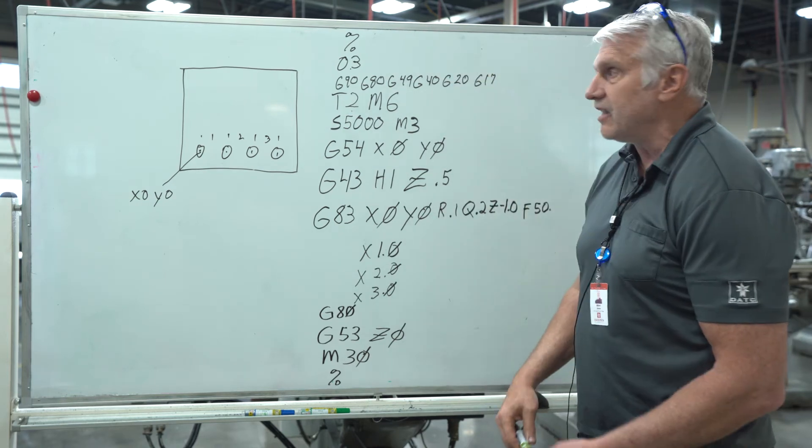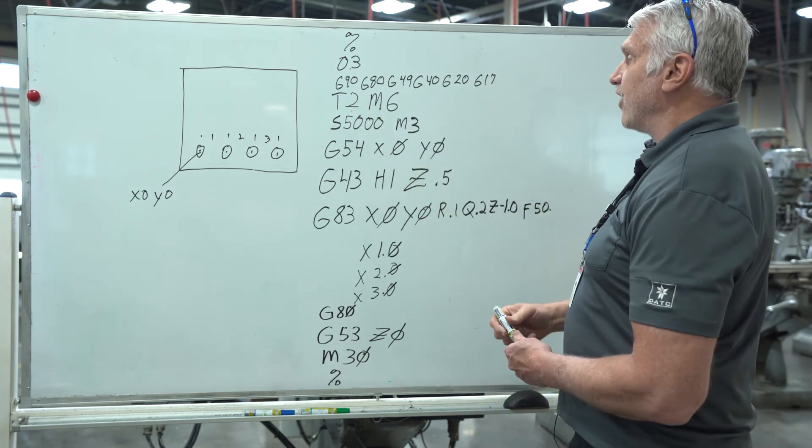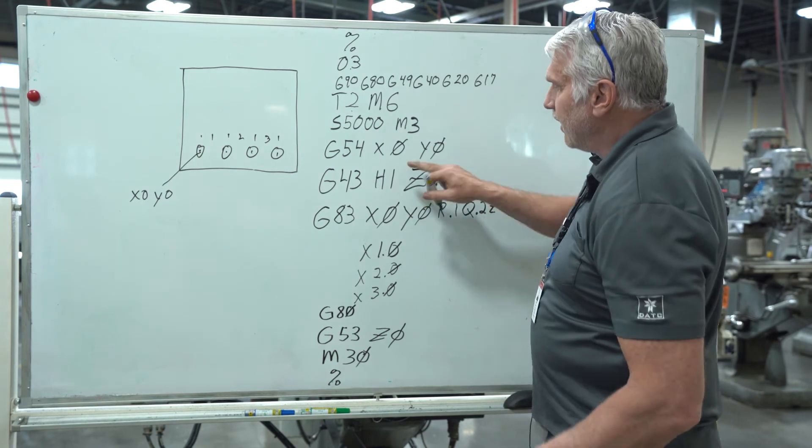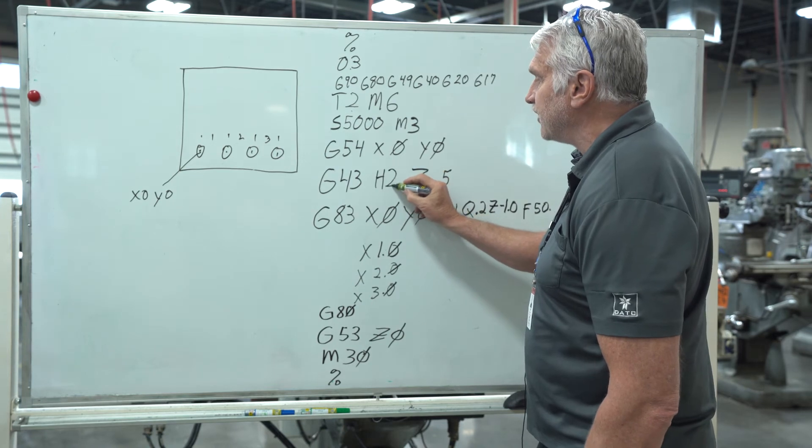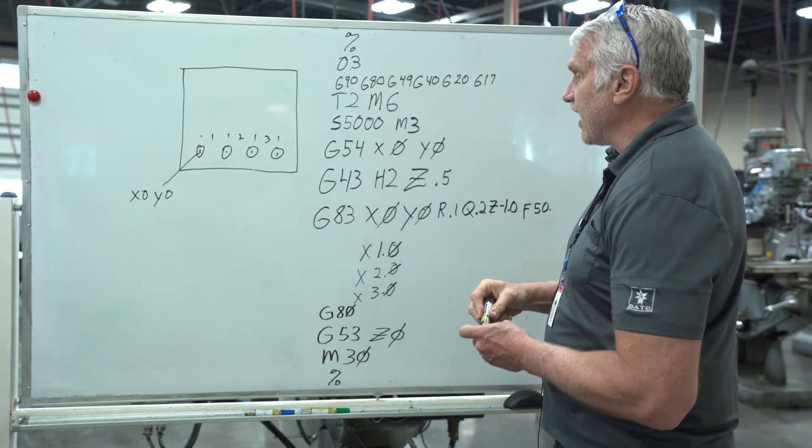So what did we really change on this is a tool number. One other thing we've got to do, instead of height offset one since this is tool two, we have to do height offset two. So it reads that correctly.